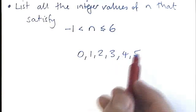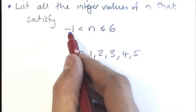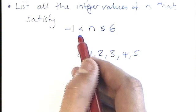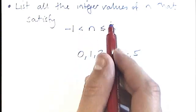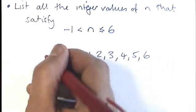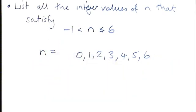And now I need to look at the endpoints. The minus 1. Is the minus 1 allowed? No. N cannot equal minus 1. Is the 6 allowed? Yes, it is allowed because there's that extra little line. So our possible integer values of N in this case are 0, 1, 2, 3, 4, 5, and 6.